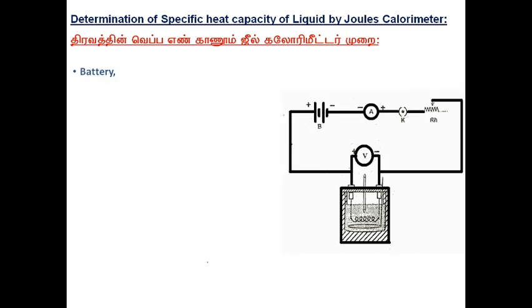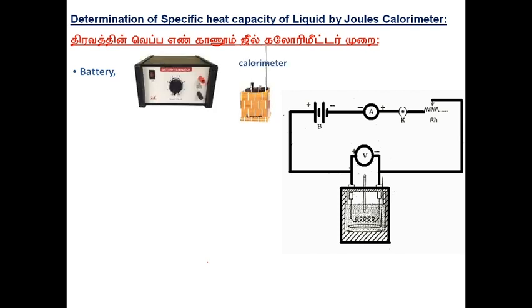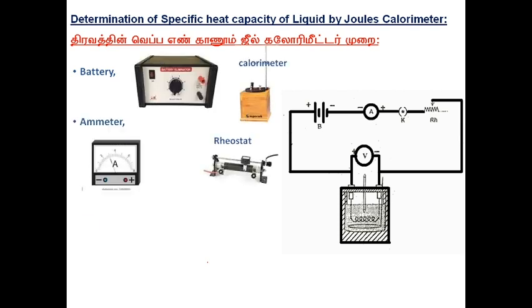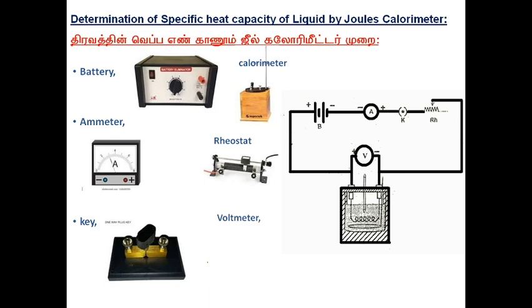Now we are going to learn about the experimental setup. A battery, calorimeter, ammeter, rheostat, voltmeter, and key are connected as shown in the figure.